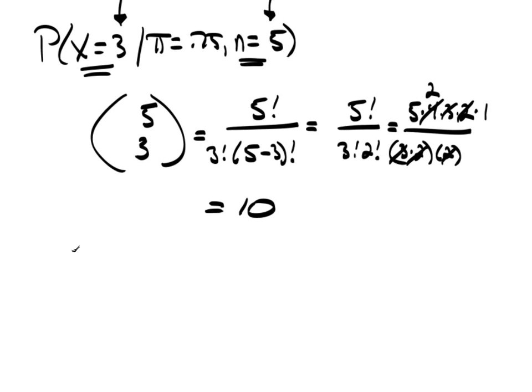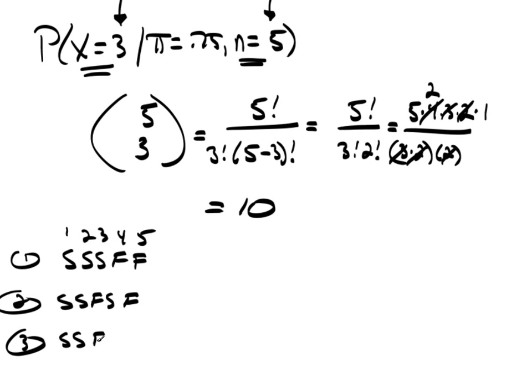So, in other words, I could have a success, success, success, a failure, and a failure. There's 5 trials. That's 1. I could have a success, a success, a failure, a success, and a failure. See trial 1, 2, 3, 4, 5. That's another possibility. I could have success, success, failure, failure, success. That's another possibility.